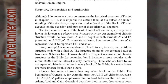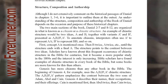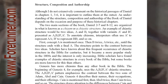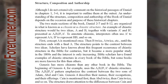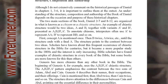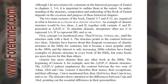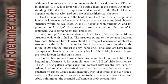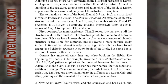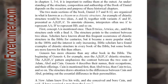An example of chiastic structure would be two ideas, A and B, together with variants A' and B', presented as AB, B', and A'. To annotate chiasms, interpreters often use A' to represent AA, B' to represent BB, and so on. First, concept A is mentioned once, then B twice, A twice, etc., until the structure ends with the final A.